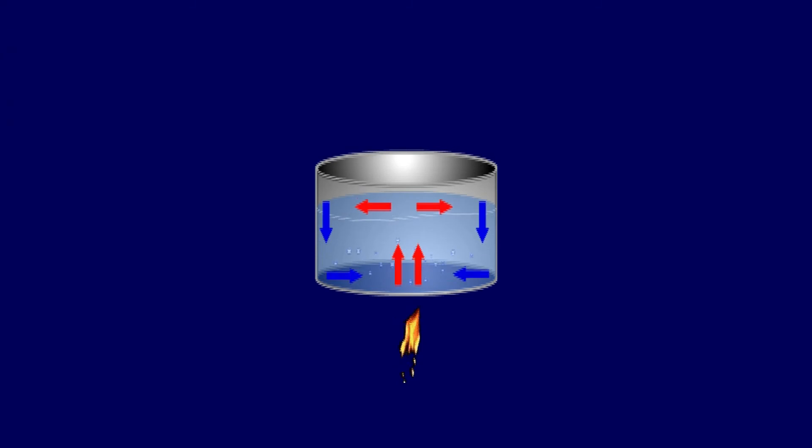The cold water at the bottom then gets hot and less dense than the water above it, so it rises to the surface. When the water is already boiling, you can now add the macaroni and wait until it is already cooked.